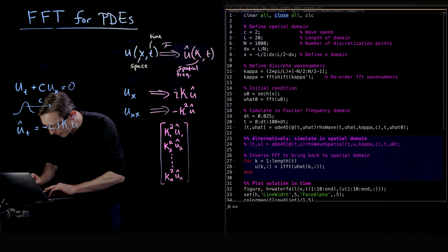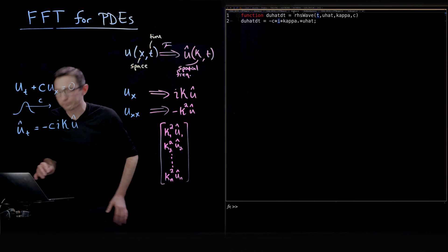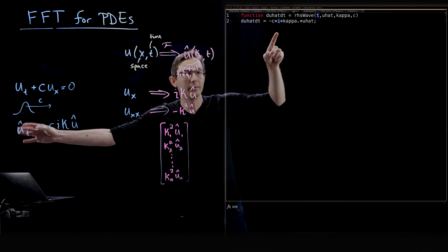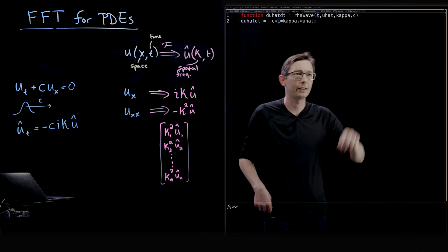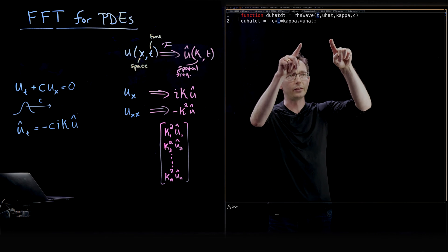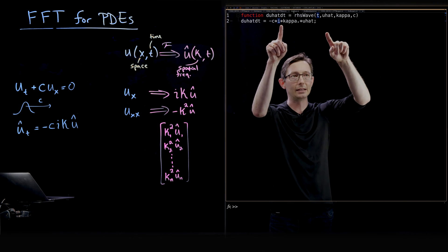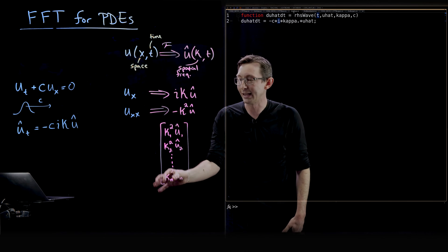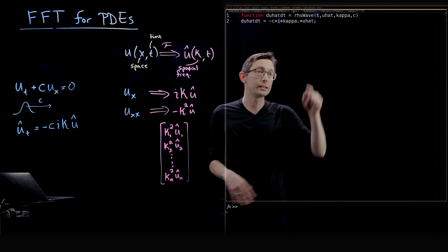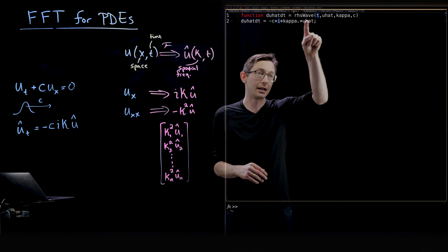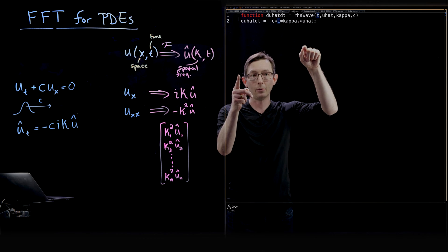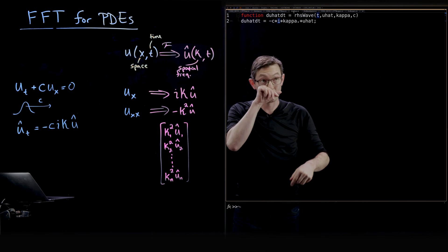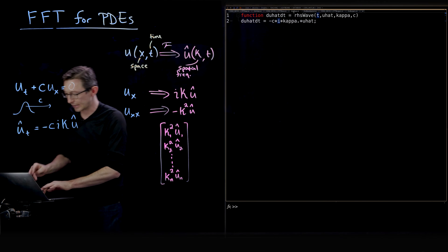Just like before, we define the right-hand side: the function du-hat/dt, the time derivative of my Fourier transform variable u-hat. It's super simple — it's just minus c times i times kappa times u-hat. Because kappa is a vector of frequencies, I have to take kappa dot-times u-hat to get element-wise products: kappa_1 · u-hat_1, kappa_2 · u-hat_2, and so on. That's my right-hand side vector.